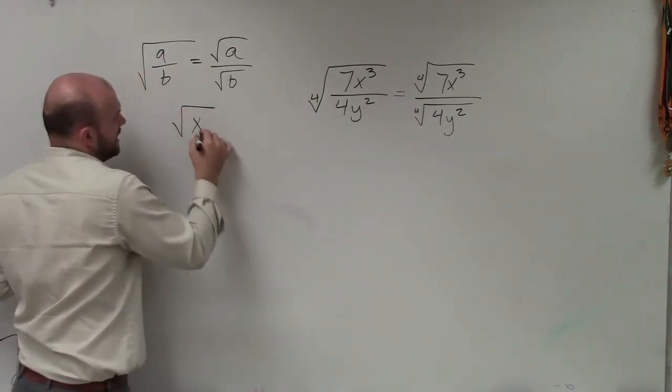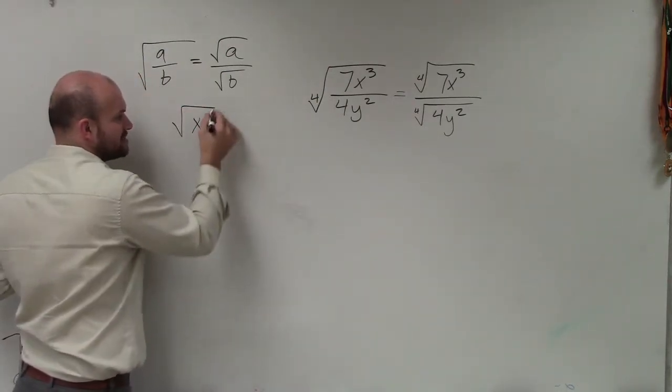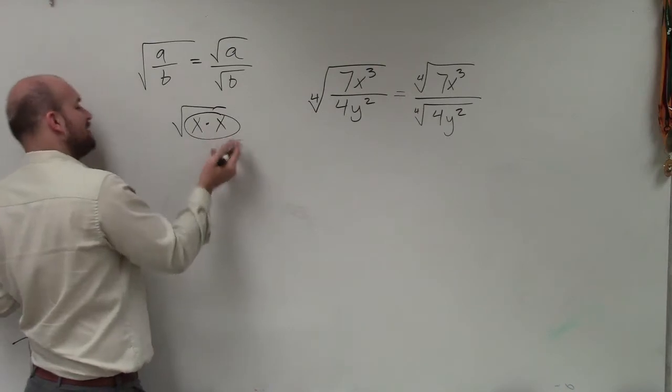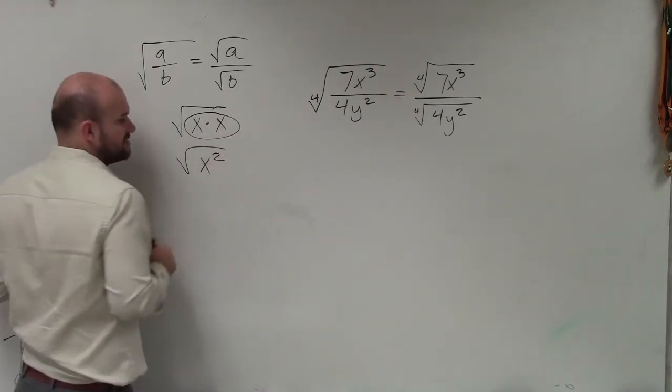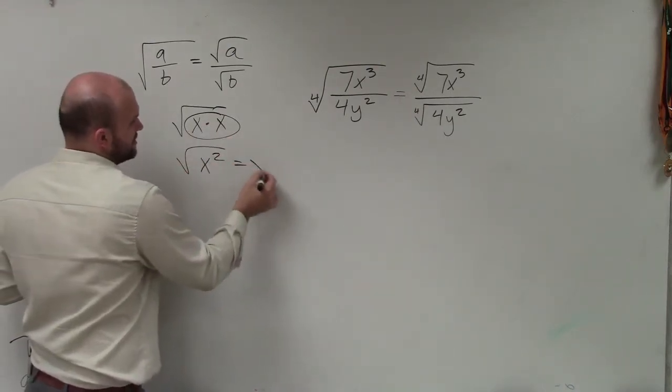So what we want to do is kind of look at, when I had x times x, the square root, we could pull those together. We pulled them out. So the simpler way to write that is just x squared. The square root of x squared is just equal to x.